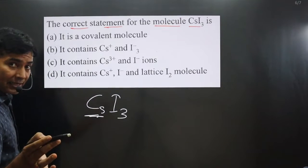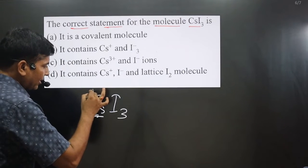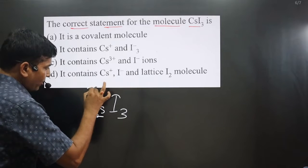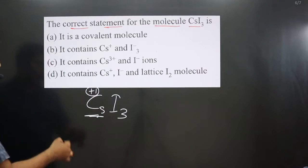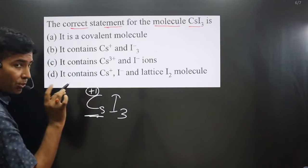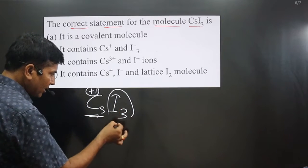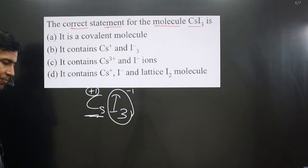Cs is metal, then it shows plus one charge, present in the first group. Overall charge for the metal is plus one. Then overall charge for the non-metal is supposed to be minus one.